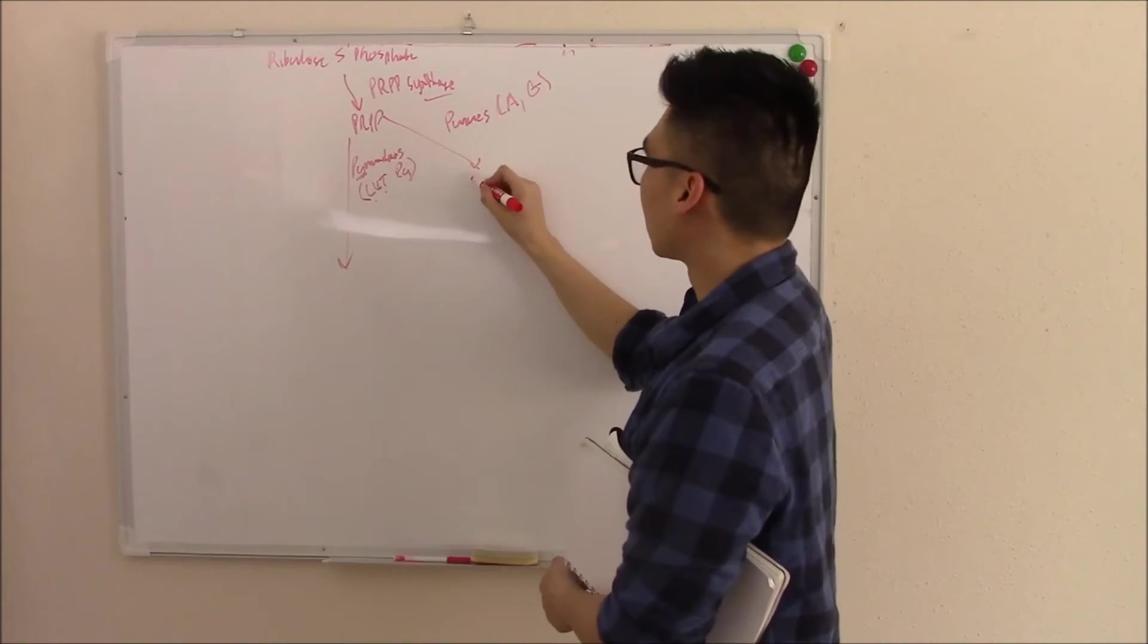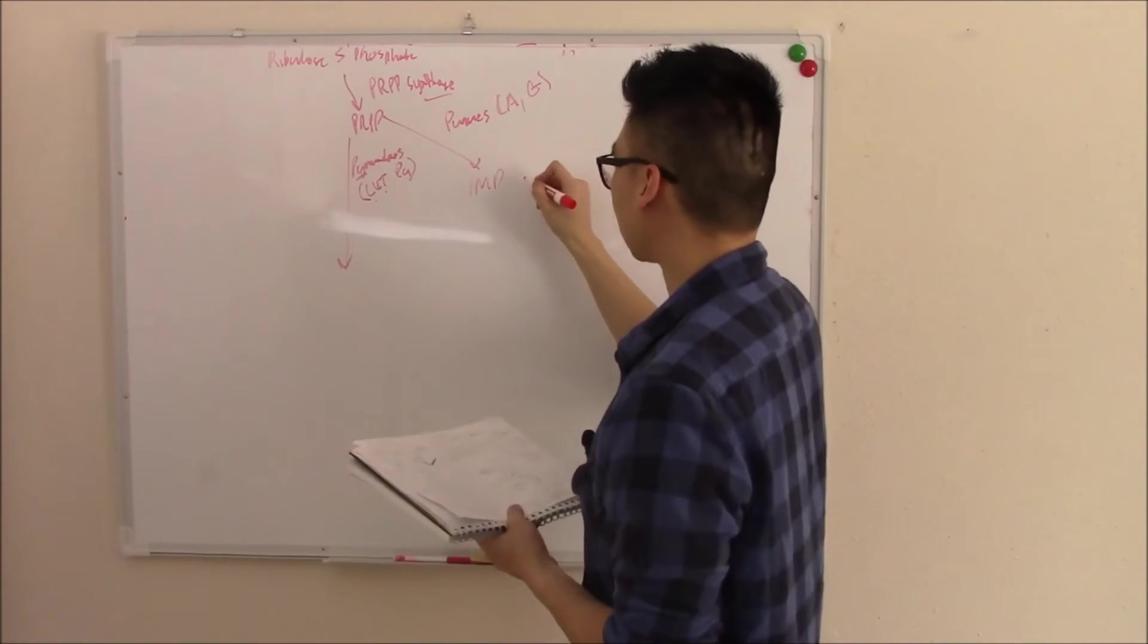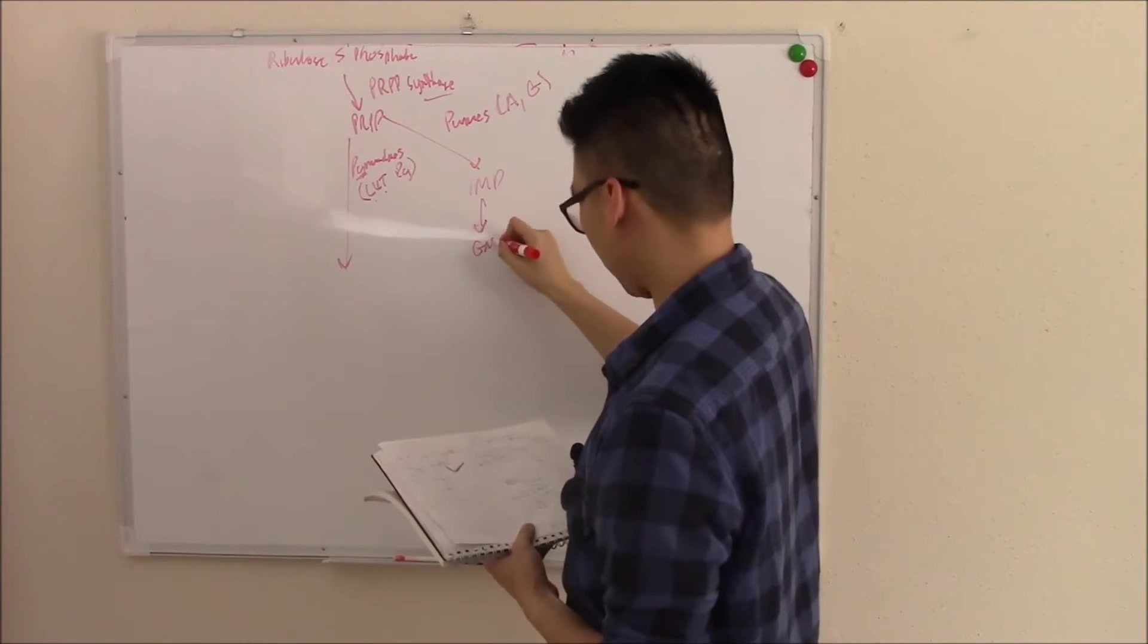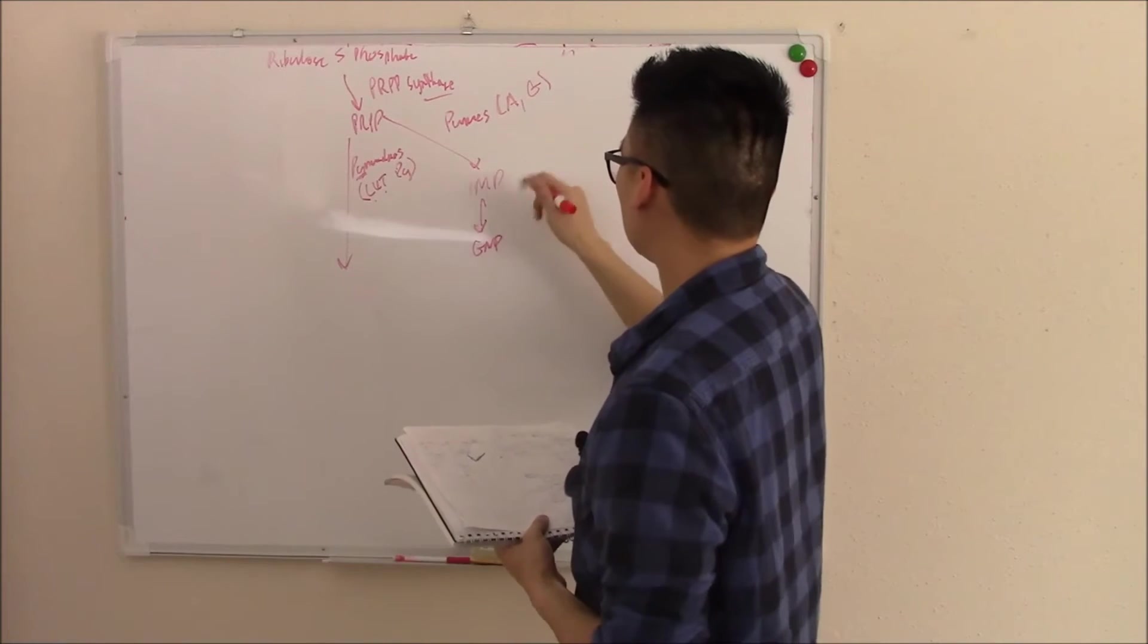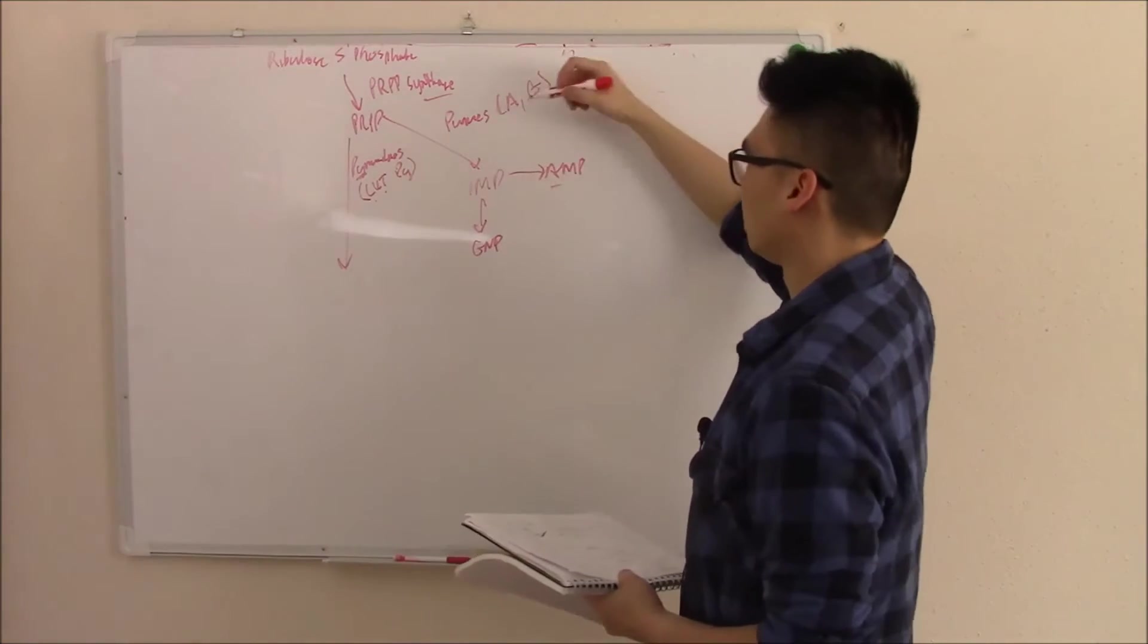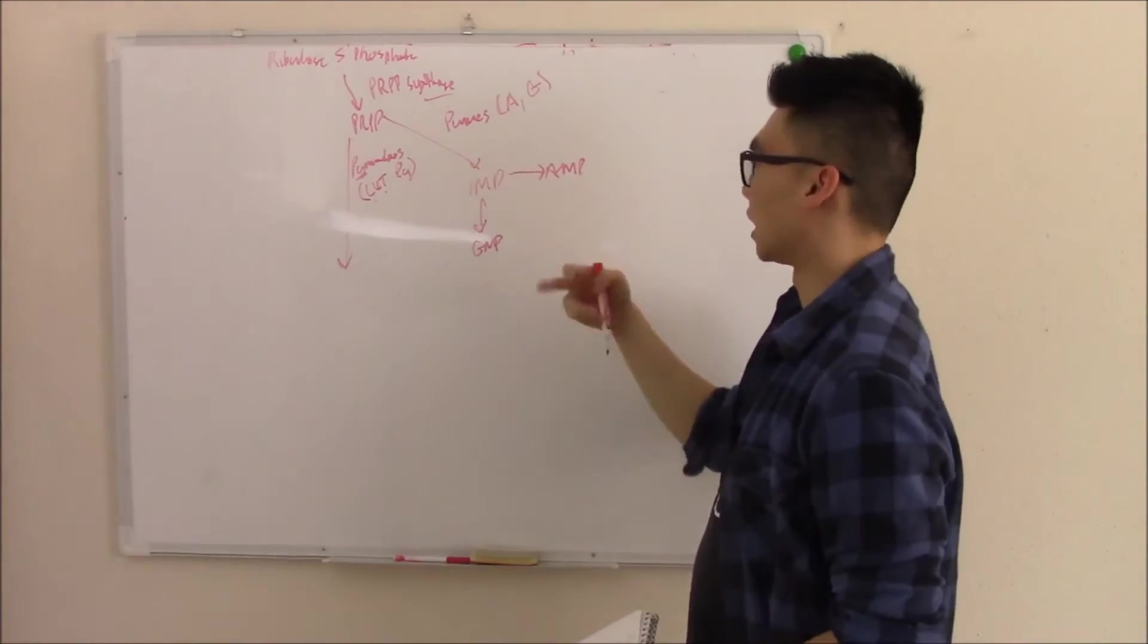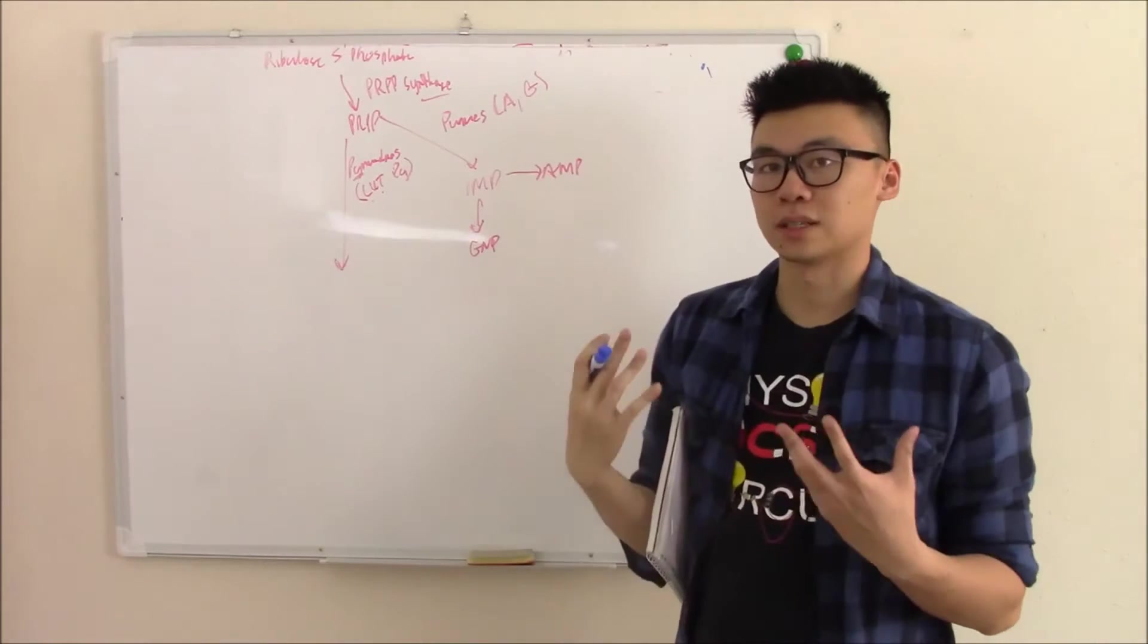PRPP becomes IMP, also known as inosinic acid. IMP becomes GMP and AMP. AMP becomes your adenine. GMP becomes your guanine. That's it for purines. It's pretty simple, pretty straightforward. This is how we synthesize purines from scratch.